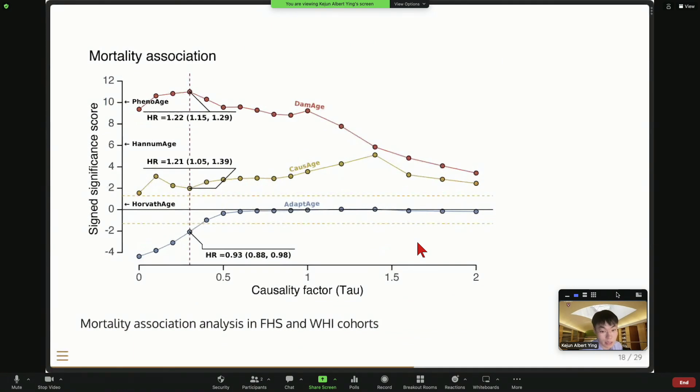But surprisingly, when we look at the mortality association, we found that the damage, as we expected people with higher damage, they tend to have higher mortality risk. And the CauseAge is in the middle. It's still significant. So you have higher CauseAge, you also have higher risk of mortality. But what is surprising is the AdaptAge. So we found that people who are shown to be older based on their adaptive age, they actually tend to live longer. They have lower mortality risk.